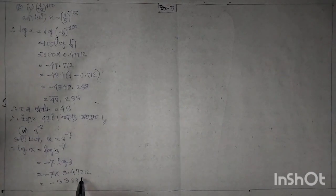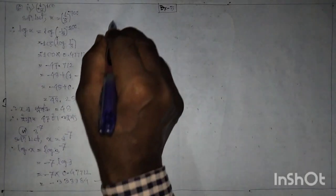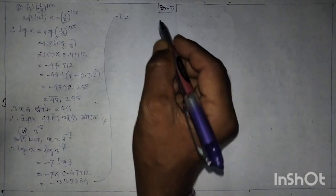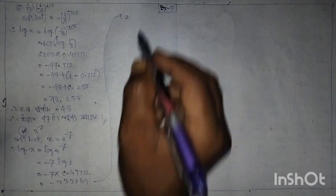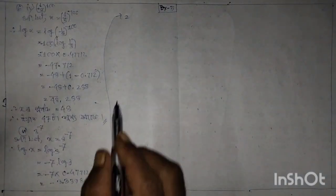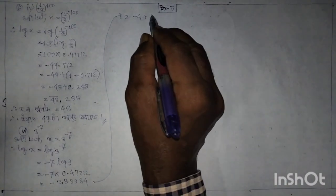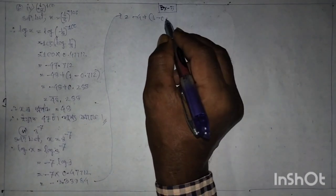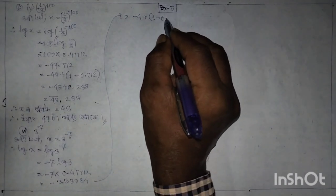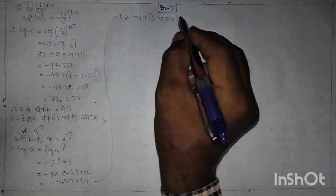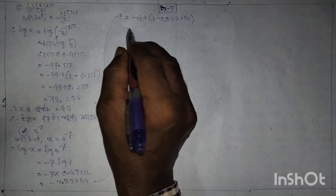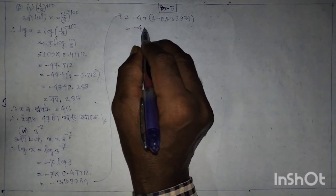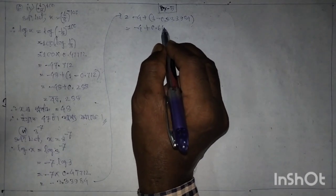Converting the result: minus 3.3394 equals minus 4 plus 1 minus 0.3394, which gives minus 4 plus 0.6606. So the characteristic is minus 4 and the mantissa is 0.6606.